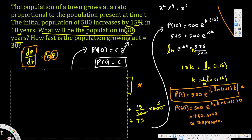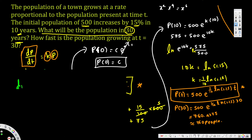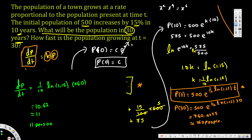dP/dt = k · P. We have k = (1/10)·ln(1.15) and P(30) ≈ 760. Multiplying these gives approximately 10.62, so the population is growing at approximately 11 people per year at t = 30. That's how we solve this problem — I hope this helps. Thanks for watching, and check out my differential equations playlist!